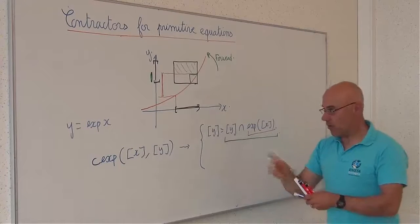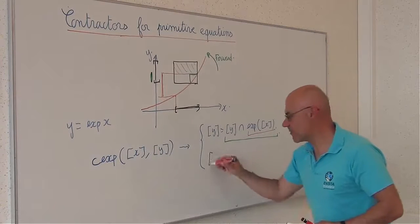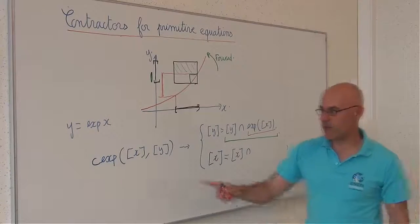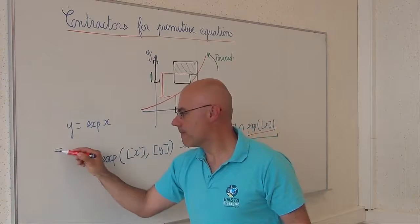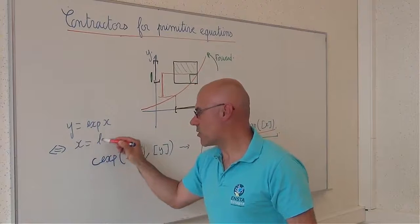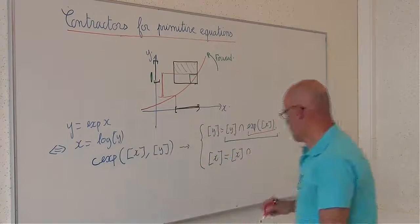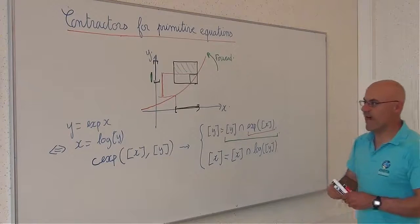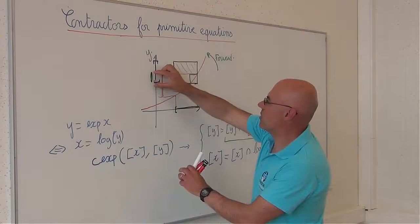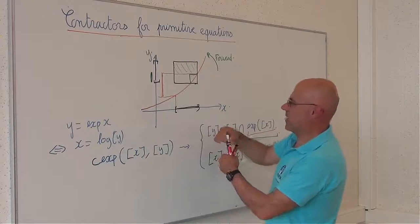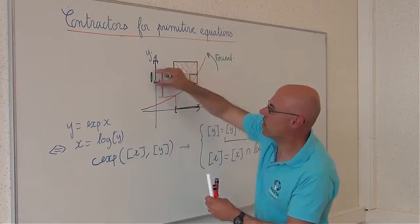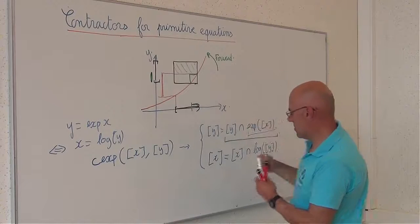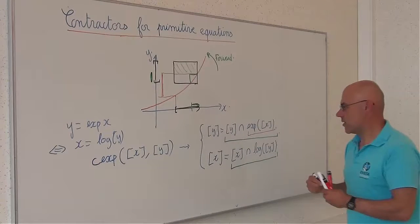Once I have contracted y, I will contract x as follows: x equal to x intersected with, recall that I have to isolate x, x equal to the logarithm of y. And if I apply this, I will compute the logarithm and I will obtain the image. The image of this interval will be this interval. And the intersection will provide me this interval.